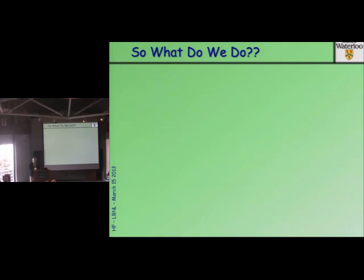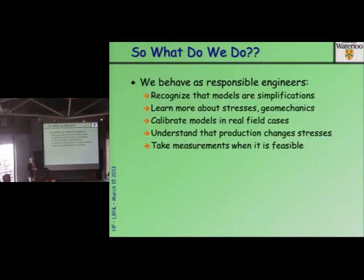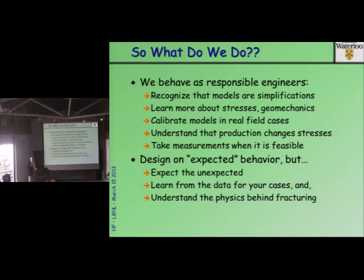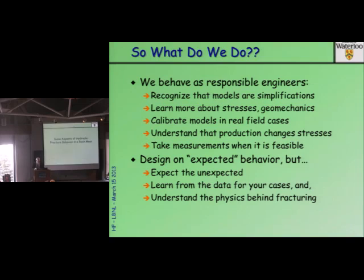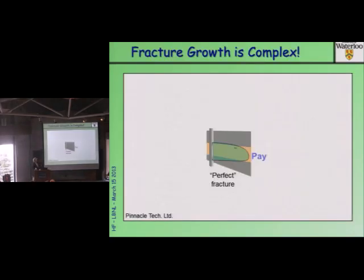We behave as responsible engineers: we recognize that models are simplifications. In our second year of marriage I bought my wife a steam iron for her birthday — so my model obviously is not sufficiently sophisticated. Our models of hydraulic fracture are similar — they're not sophisticated enough and we don't know how to make them sophisticated enough. We learn more about stresses and geomechanics, we take measurements, we do calibration. We design on expected behavior but must remain vigilant about unexpected behavior because of uncertainty about all our assumptions.